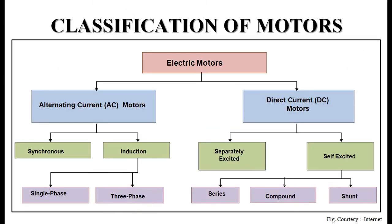We will go through the classification of electric motors. Electric motors can be classified into two categories: alternating current motors (AC motors) and direct current motors (DC motors). AC motors can further be classified as synchronous motors and induction motors. Induction motors have two types: single-phase induction motor and three-phase induction motor.